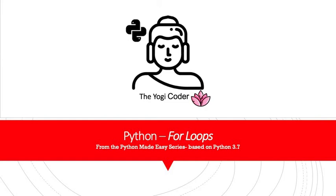Well, welcome to training class number six, Python For Loops from the Python Made Easy series based on Python 3.7. In this training, we're going to cover a lot of ground. We're going to talk about for loops, what they are, their basic construction, how to use them.